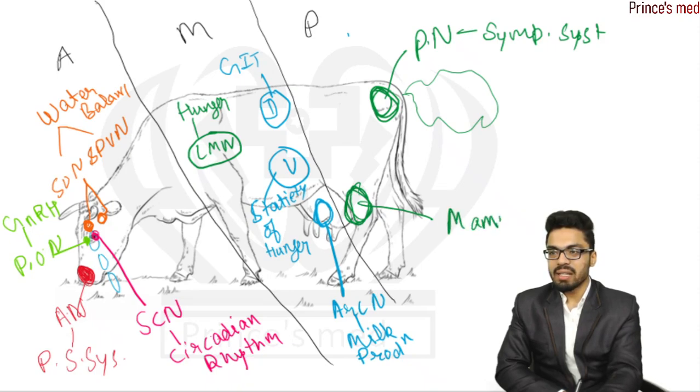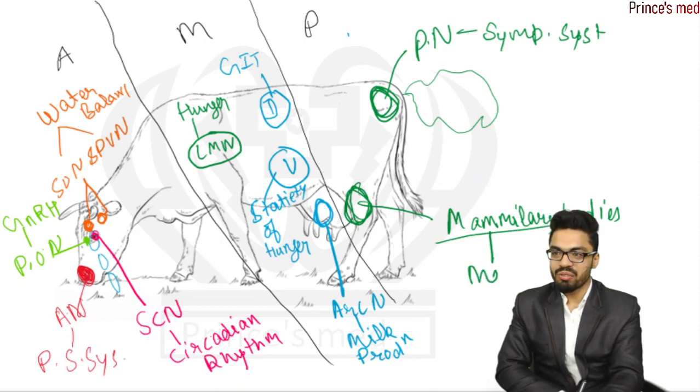And here one nucleus present which is known as mammillary bodies. As it is present near mammary gland, so same spelling mammillary. Mammillary bodies and mammillary same sound like memory, so function of this nucleus is in the memory, that is in the Papez circuit.